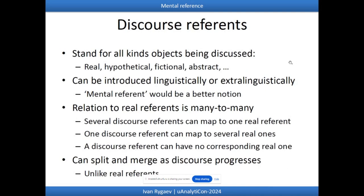So what are discourse referents? These are mental entities that stand for all kinds of objects being discussed. They can correspond to real referents, hypothetical objects, fictional or abstract objects — whatever. They can be introduced linguistically or extra-linguistically; perceiving an object also creates a discourse referent in our mind. The relation between discourse referents and real referents is many-to-many: several discourse referents can correspond to one real referent, or one discourse referent can map to several real ones — for example, if I don't distinguish twins.